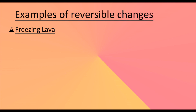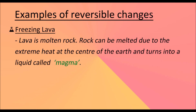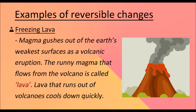Freezing lava. Lava is molten rock. Rock can be melted due to the extreme heat at the centre of the Earth and turns into a liquid called magma. Magma gushes out of the Earth's weakest surfaces as a volcanic eruption. The runny magma that flows from the volcano is called lava, and lava that runs out of volcanoes cools down quickly.